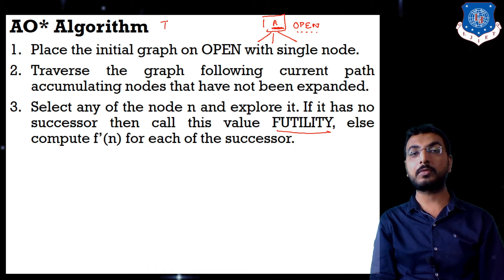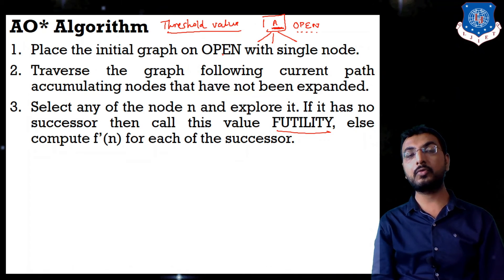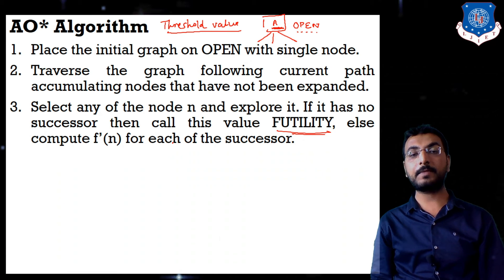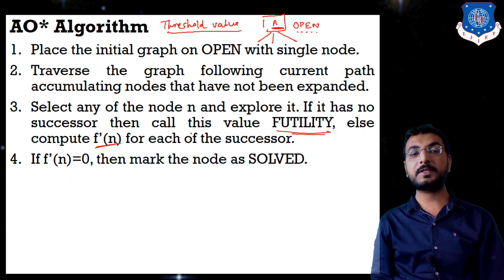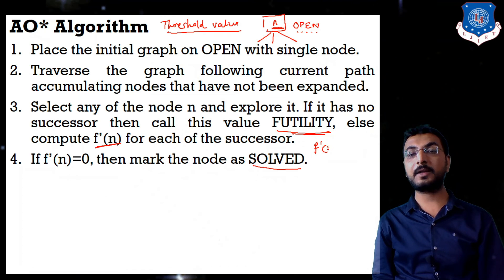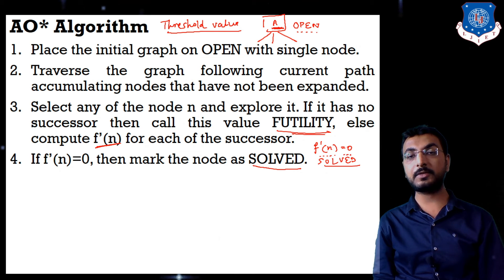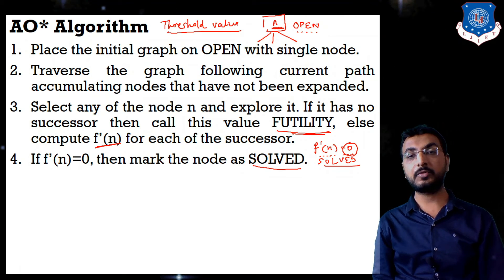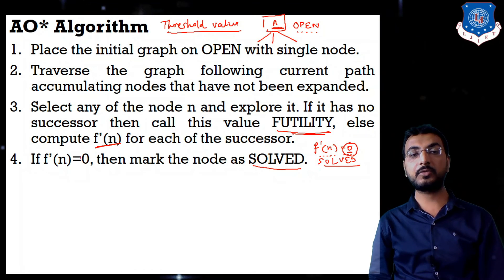Step 3: Select any unexpanded node n and explore it. If it has no successor, assign it a futility value. Futility is a threshold value used to terminate the search. If futility is not reached, compute f'(n) for each successor, where f'(n) is the heuristic value. If f'(n) equals 0, mark that node as solved, meaning the goal state is reached.